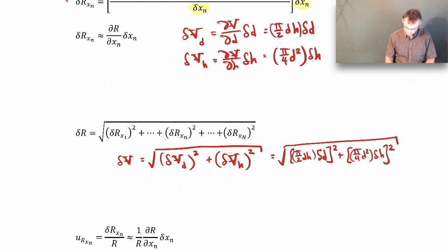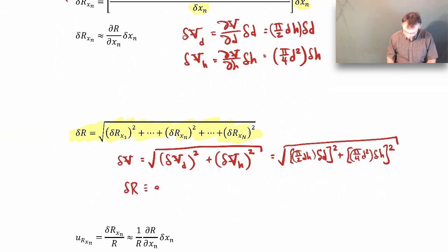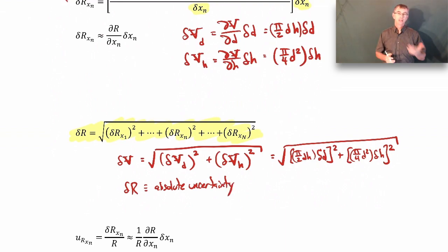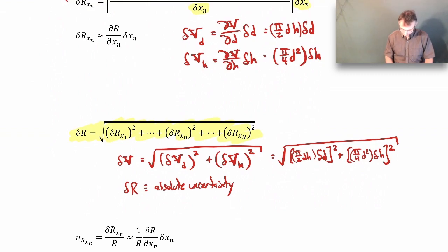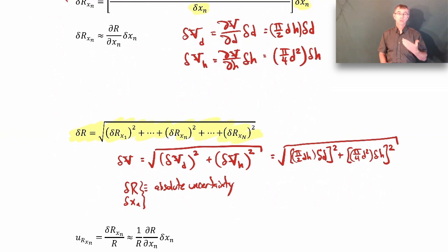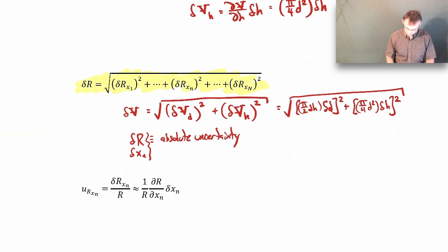There's another way we can express uncertainty. The expression we've been using is in terms of absolute uncertainty — delta R is the absolute uncertainty. For example, if the diameter of the can is 4 centimeters plus or minus 0.1 centimeters, the 0.1 centimeter is the absolute uncertainty. We can also have relative uncertainty, which is the absolute uncertainty divided by the result itself. The relative uncertainty in R due to the uncertainty in Xn is the absolute uncertainty in R divided by R itself.